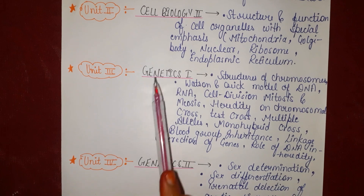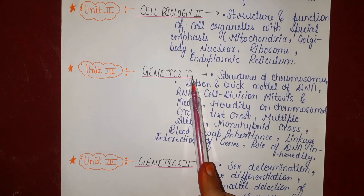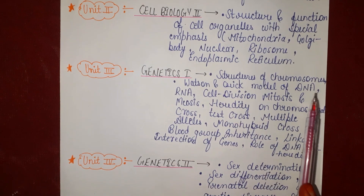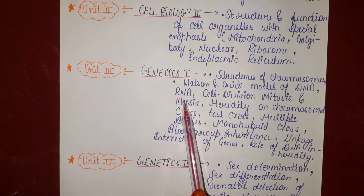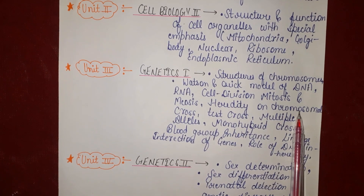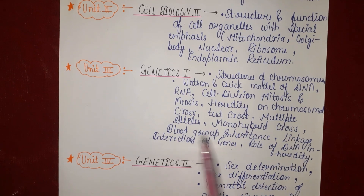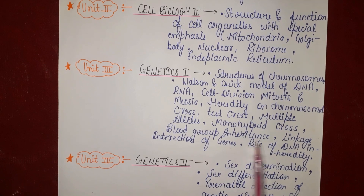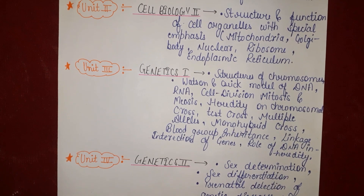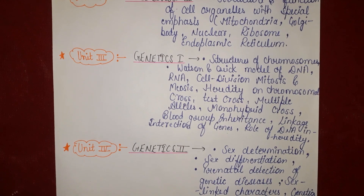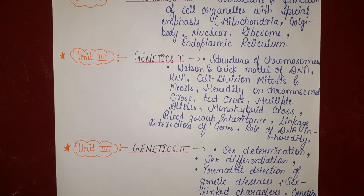In Unit 3, Genetics First, we study the structure of chromosomes, the Watson and Crick model of DNA, RNA, cell division (mitosis and meiosis), heredity and chromosomal cross, test cross, multiple alleles, monohybrid cross, blood group inheritance, linkage and interaction of genes, and the role of DNA in heredity. We have studied all of these in 12th class as well, but in BSc First Year we will study them in more detail.